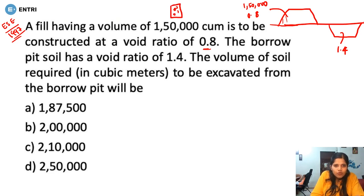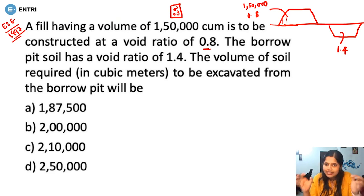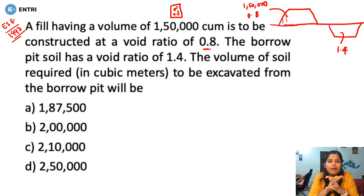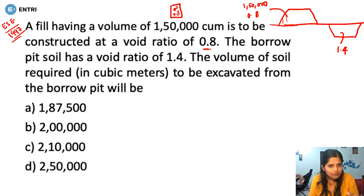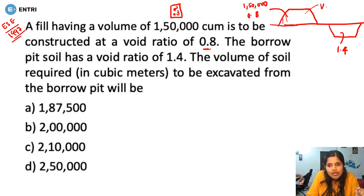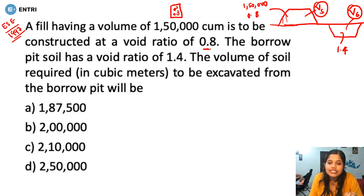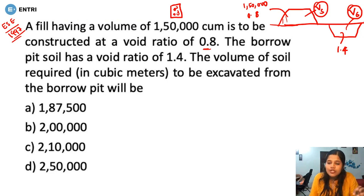Soil is made up of solids and voids. When we consider soil particles, the volume of solids remains the same regardless of compaction. You can change the void ratio, but the volume of solid particles does not change. That is why we use the void ratio relationship with the total volume of solids.